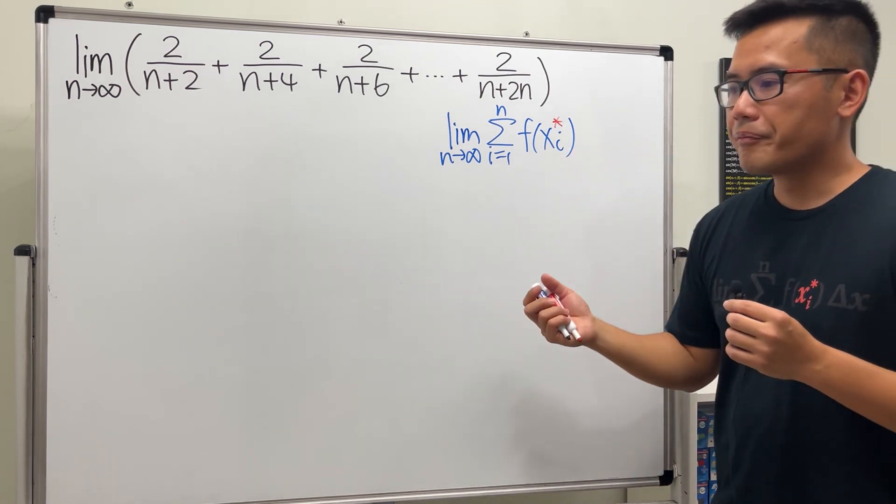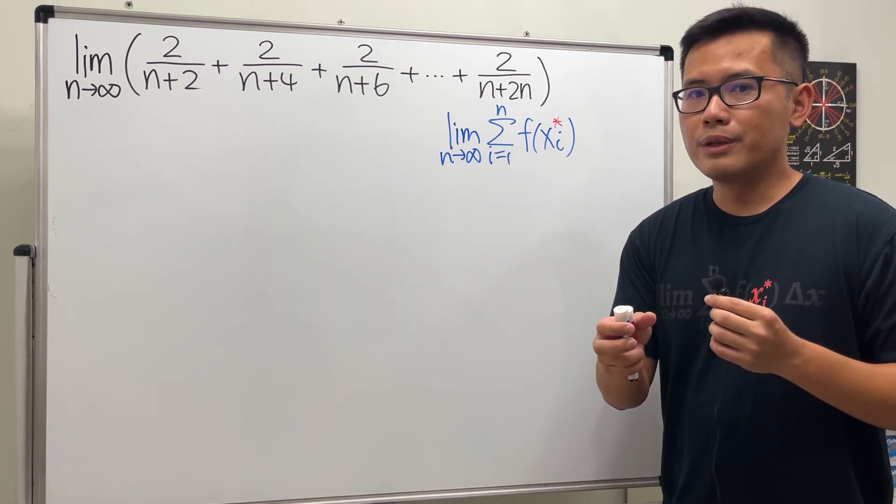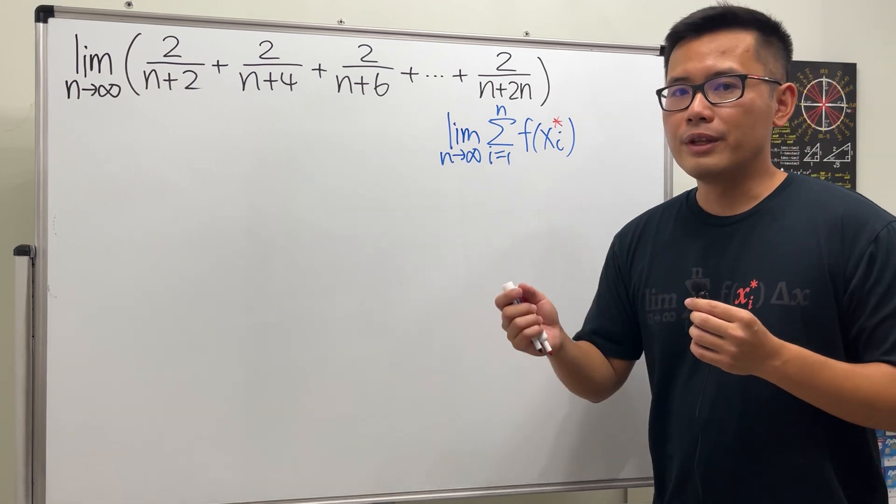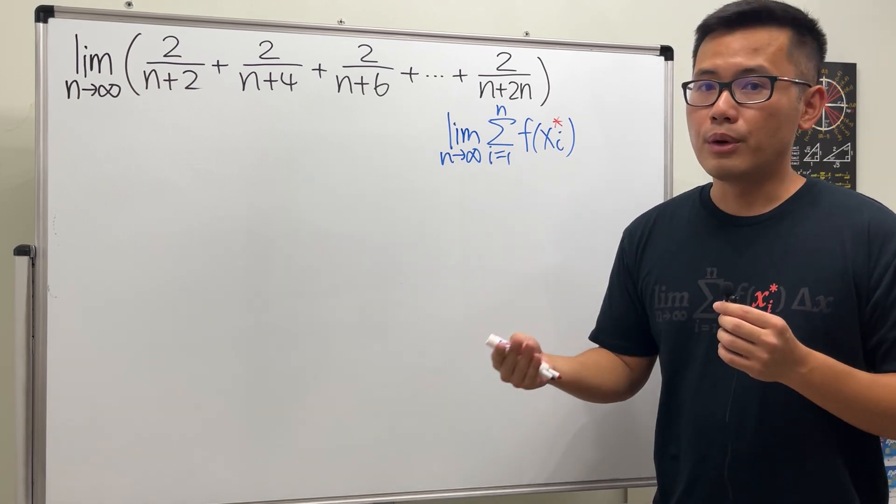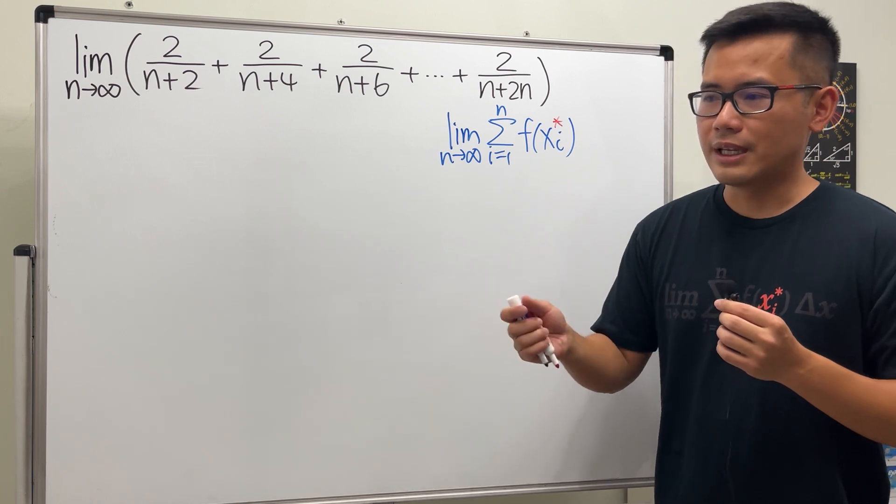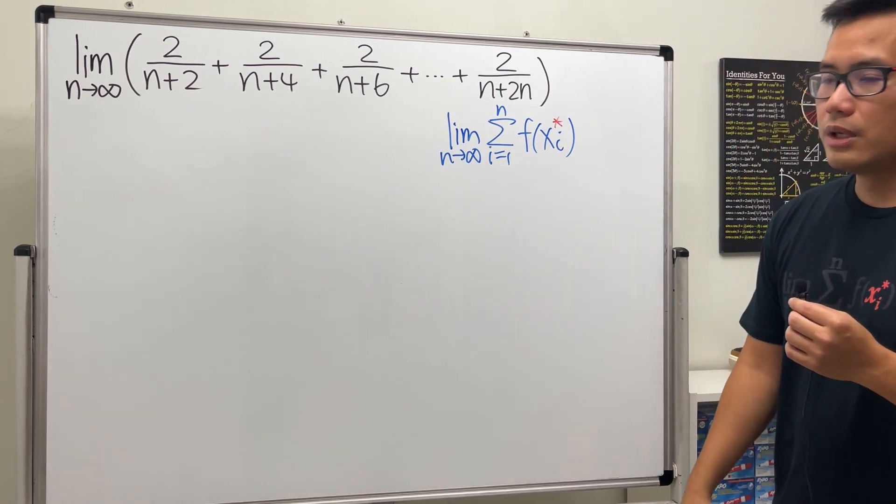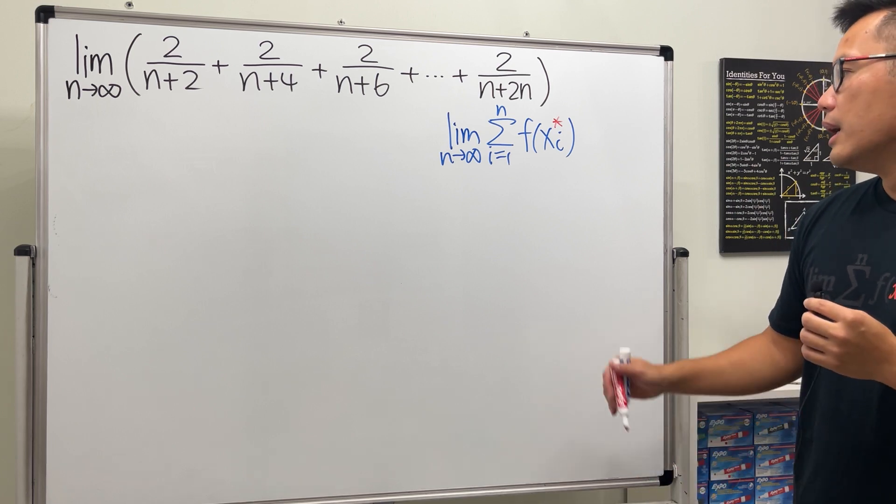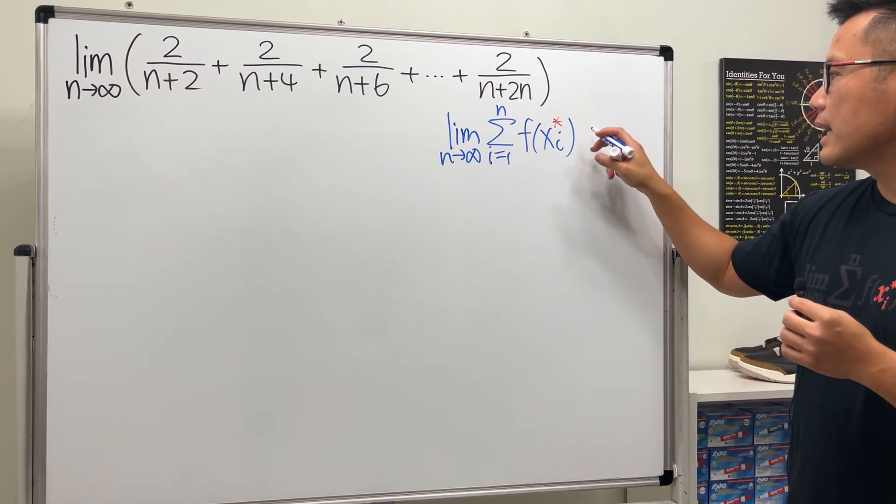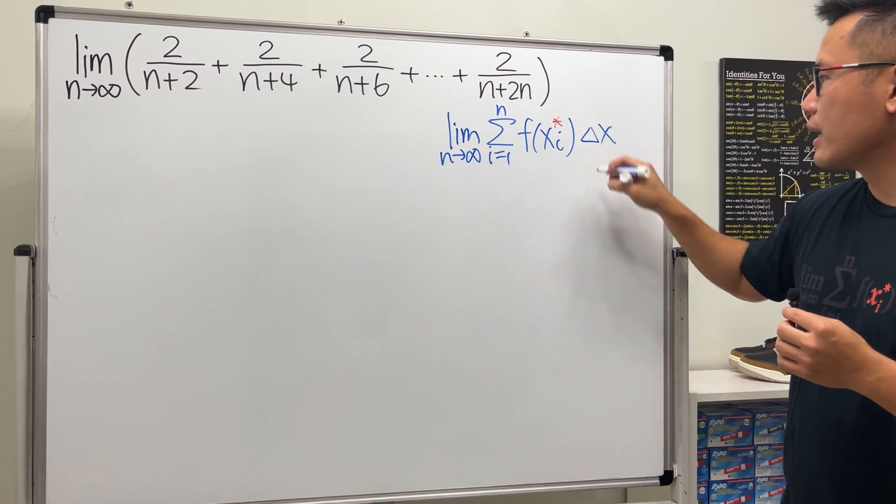Don't worry too much about the star because it just means that when you are doing the so-called rectangle sum or Riemann sum, you do not have to use the right endpoint. You can use different kinds of rectangles, such as the midpoint rectangle, to do the approximation of the area. That's just a little notation. And then lastly we have to have the so-called delta x.